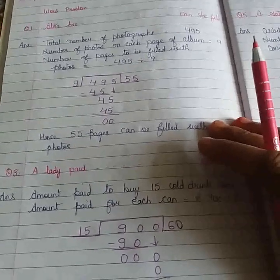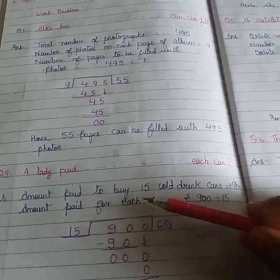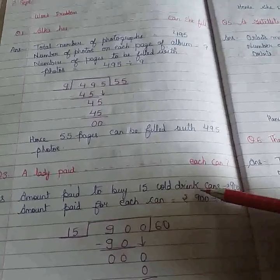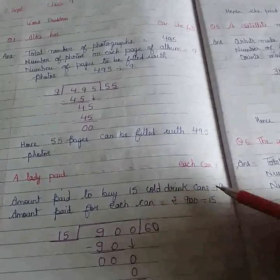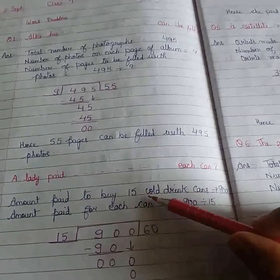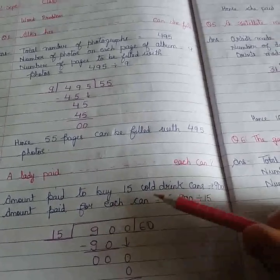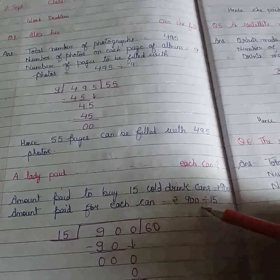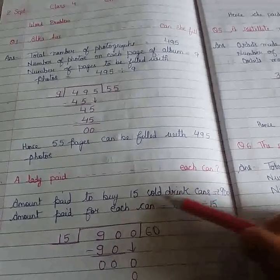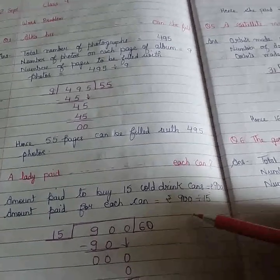Now question number 3. Here it is given that a lady is purchasing cold drink cans. She has purchased 15 cold drink cans for Rs. 900. Now we are asking what is the cost of 1 can. So again we have to divide. When the cost of more things is given and cost of 1 thing is asked, we have to divide.